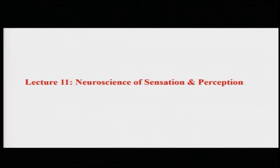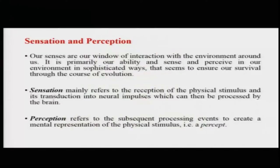This is the third week and today we will start talking about the neuroscience of sensation and perception. Sensation and perception are one of the most important — basically the first mental functions that we can talk about — and they represent our interaction with the environment around us. It is primarily our ability to sense and perceive the environment in sophisticated ways that seems to ensure our survival through the course of evolution.